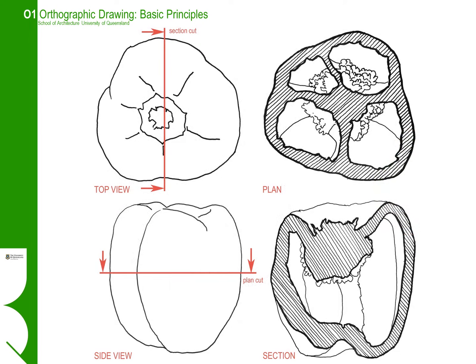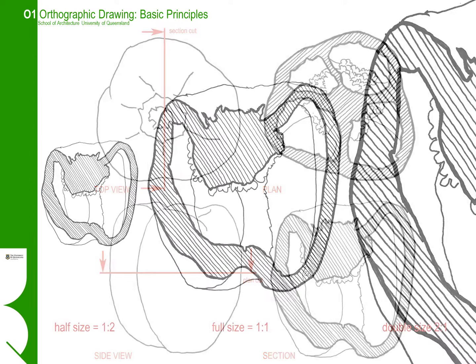You can see here the assemblage of the orthographic drawings we have created from the capsicum. We have the top view and the side view — the side view is often referred to as the elevational view — and then the unreal views: the plan, which is a section cut through the capsicum parallel to the ground plane, and the section cut, which is a slice perpendicular to the ground plane.